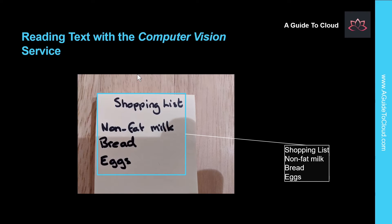The next capability is reading text with the computer vision service. The ability for computer systems to process written or printed text is an area of artificial intelligence requiring computer vision capabilities to read the text and natural language processing capabilities to make sense of it. The basic foundation of processing printed text is optical character recognition, or OCR, in which a model can be trained to recognize individual shapes as letters, numerals, punctuation, or other elements of text.